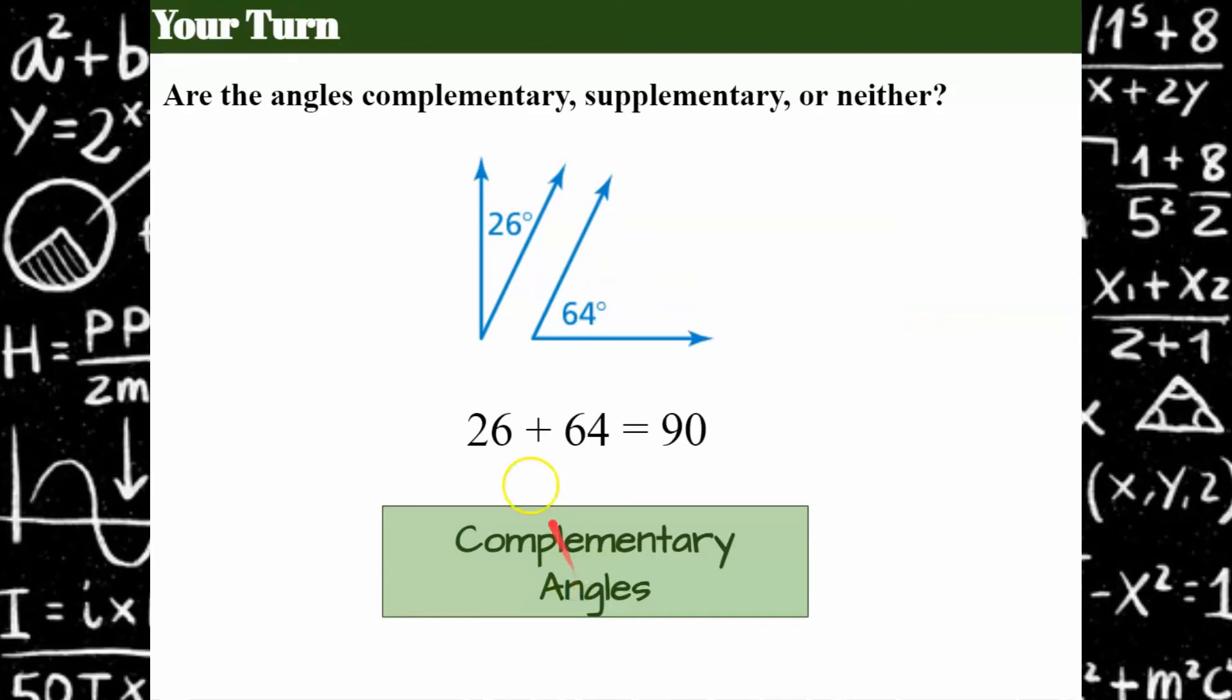Let's add them together. 26 plus 64 is 90. Complementary angles.